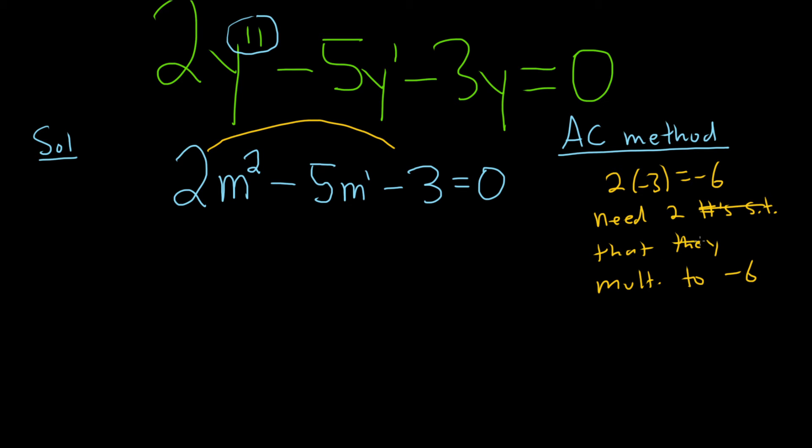So what are two numbers that multiply to negative 6 and add to the middle term here, to negative 5? So you multiply these two numbers, 2 and negative 3, and then you need two numbers that multiply to negative 6 and add to negative 5. Well, 1 and 6, so it'll be, I think, negative 6 and 1.